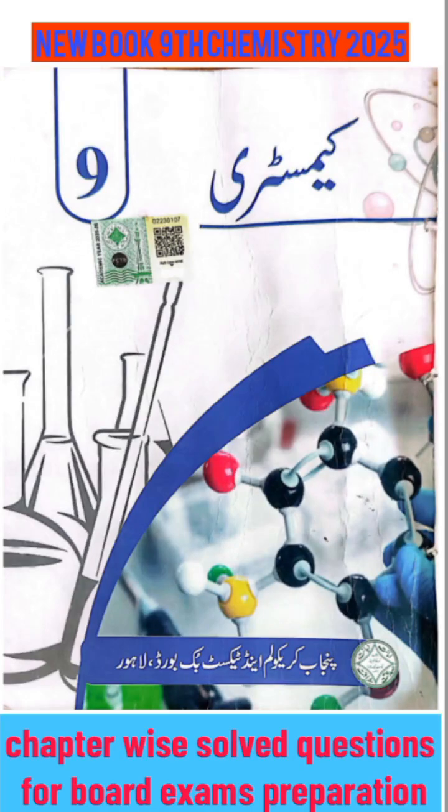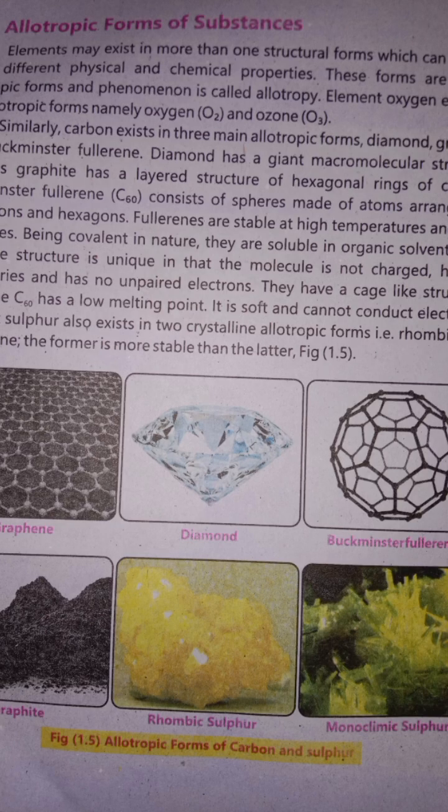9th Chemistry, Chapter 1, Topic 1.4: Allotropic Forms of Substances. An element may exist in more than one structural form, which can exhibit quite different physical and chemical properties. These forms are called allotropic forms, and the phenomenon is called allotropy.